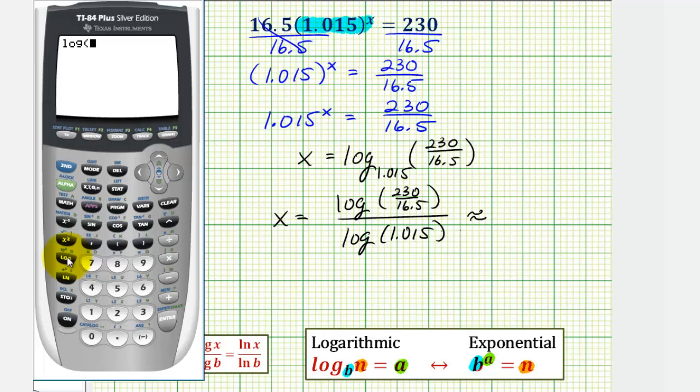And now we'll go to the calculator to get our decimal approximation. So we have common log of our quotient, closed parenthesis, divided by the common log of our base. So to three decimal places, x would be approximately 176.962.